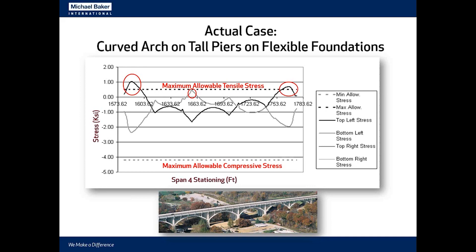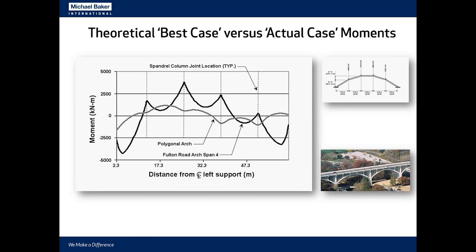When we looked at the actual case of our bridge — where the arches are curved between spandrel columns for aesthetic reasons and rest on tall piers on somewhat flexible foundations founded on shale — there is quite a bit more tensile stress from the same loading. These spikes in tensile stress get up to about 1 KSI at service load, located in many cases near the joints of the segments, significantly higher than the ideal case.